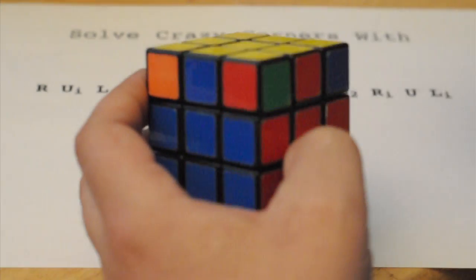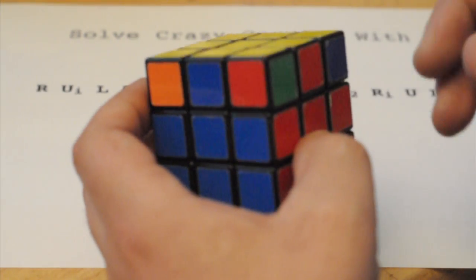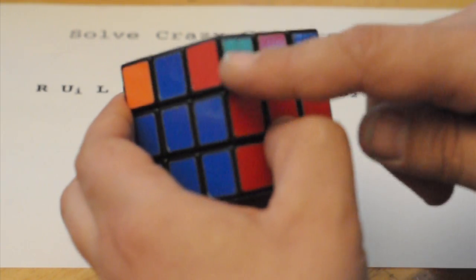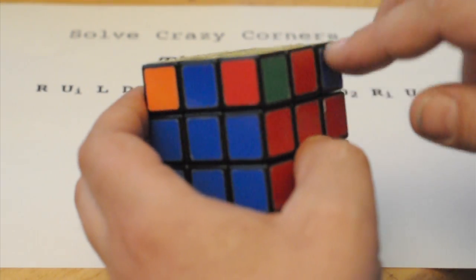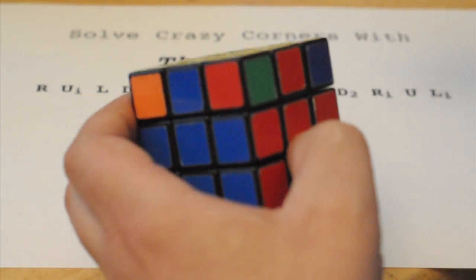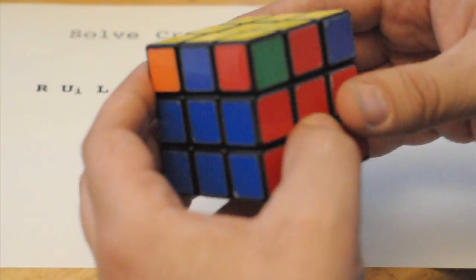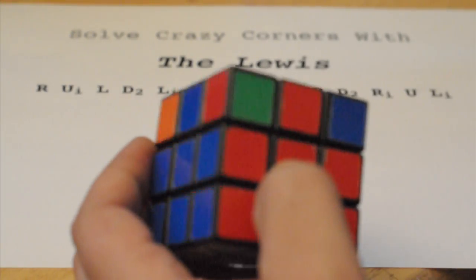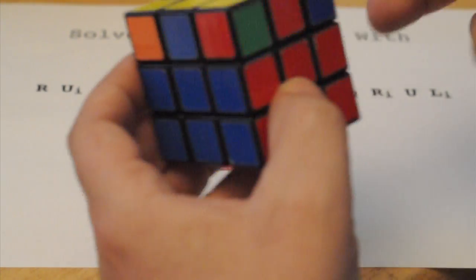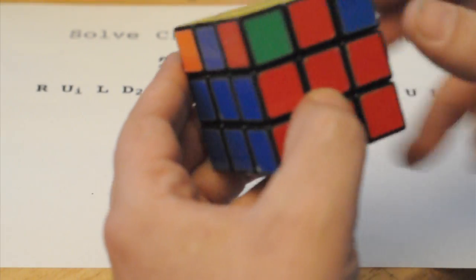This always solves all the corners. But if you reposition it, it may solve the whole top face or usually leaves you one Allen or reverse Allen away from being solved. This just nukes crazy corners. So, I'm going to apply it.